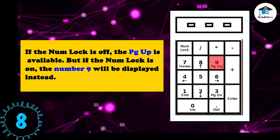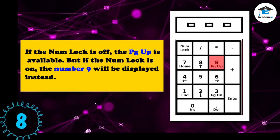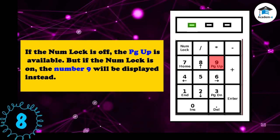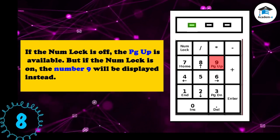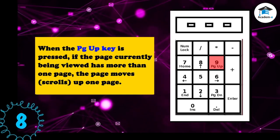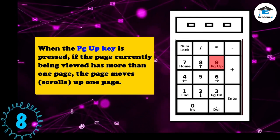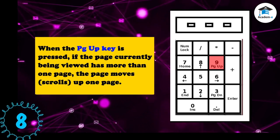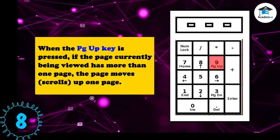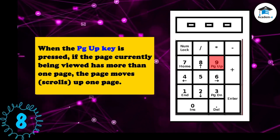If the Num Lock is off, the PgUp key is available, but if the Num Lock is on, the number nine will be displayed instead. When the PgUp key is pressed, if the page currently being viewed has more than one page, the page moves and scrolls up one page.